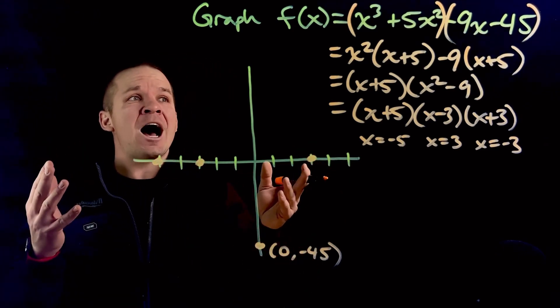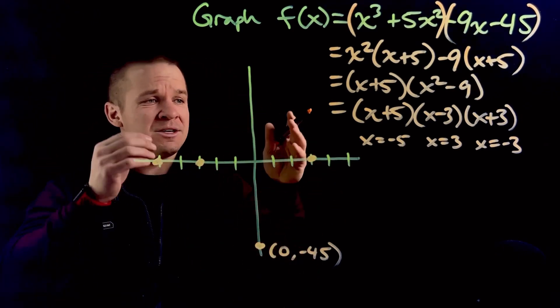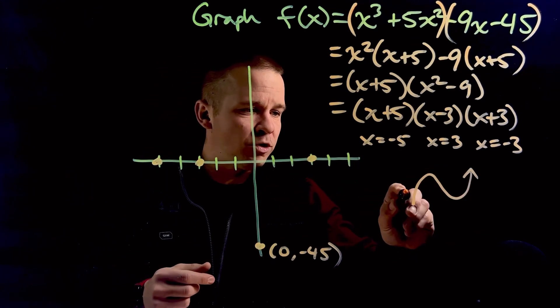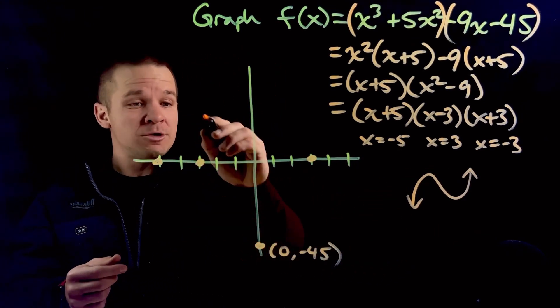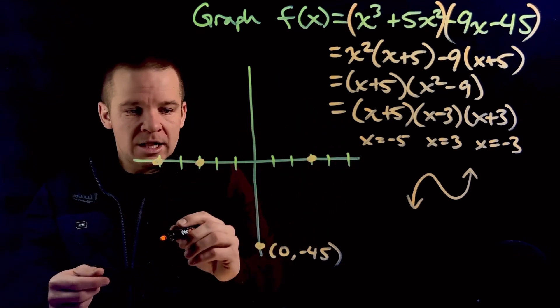So I get 0, negative 45. Now, I've got a positive cubic function. Reminder, a positive cubic function will look something kind of like that right there. All right, let's do it.